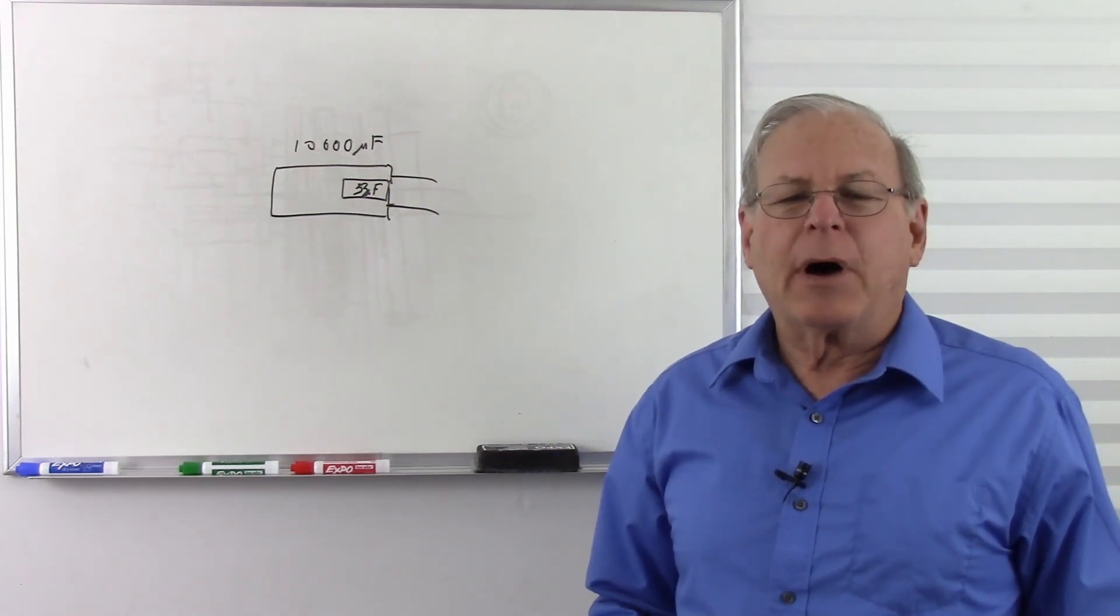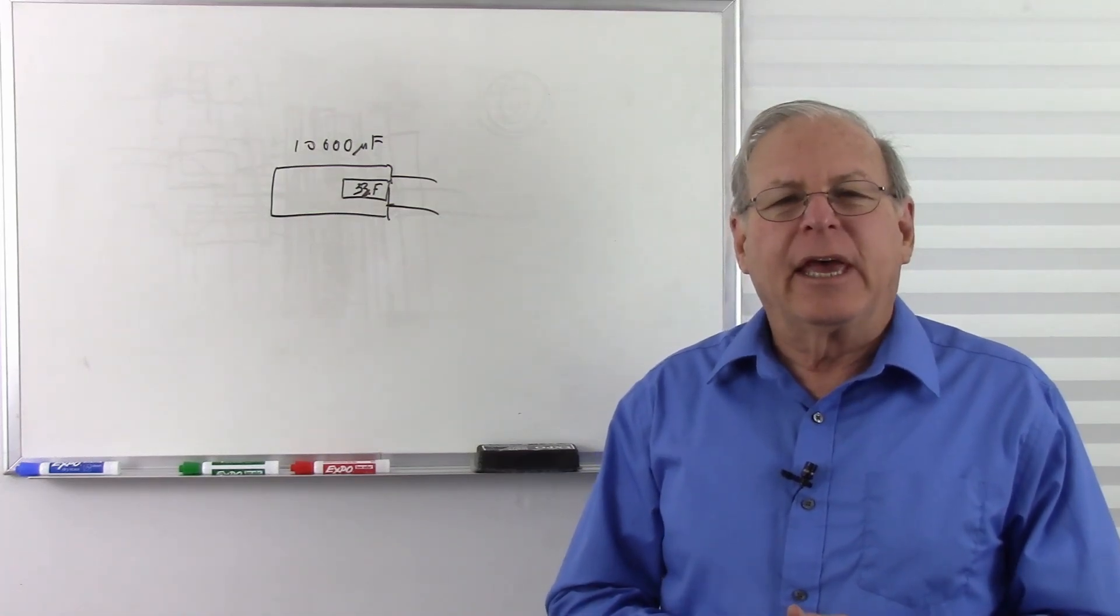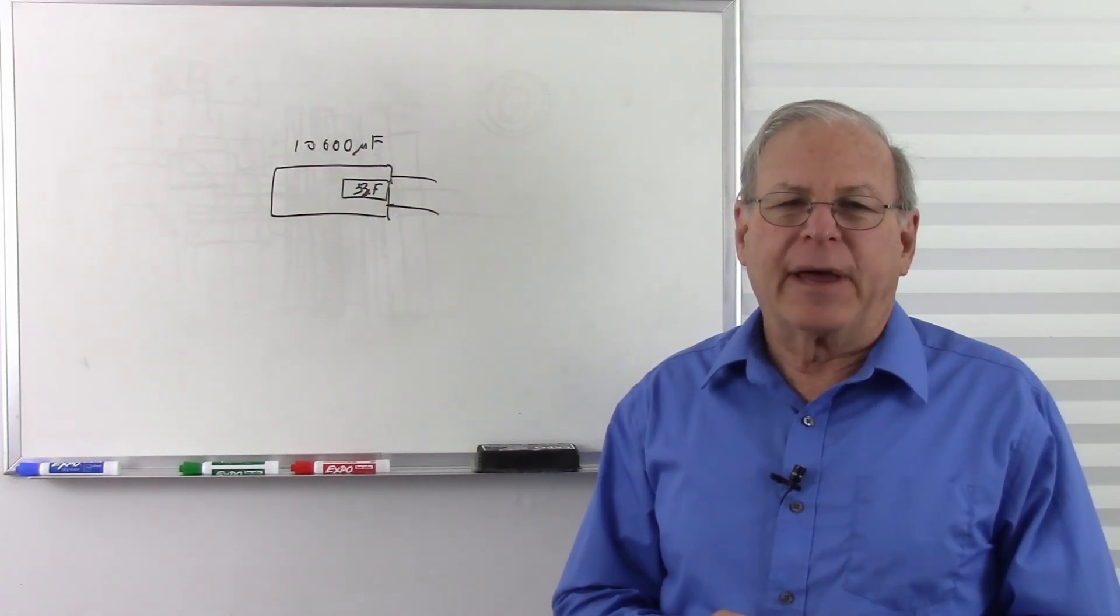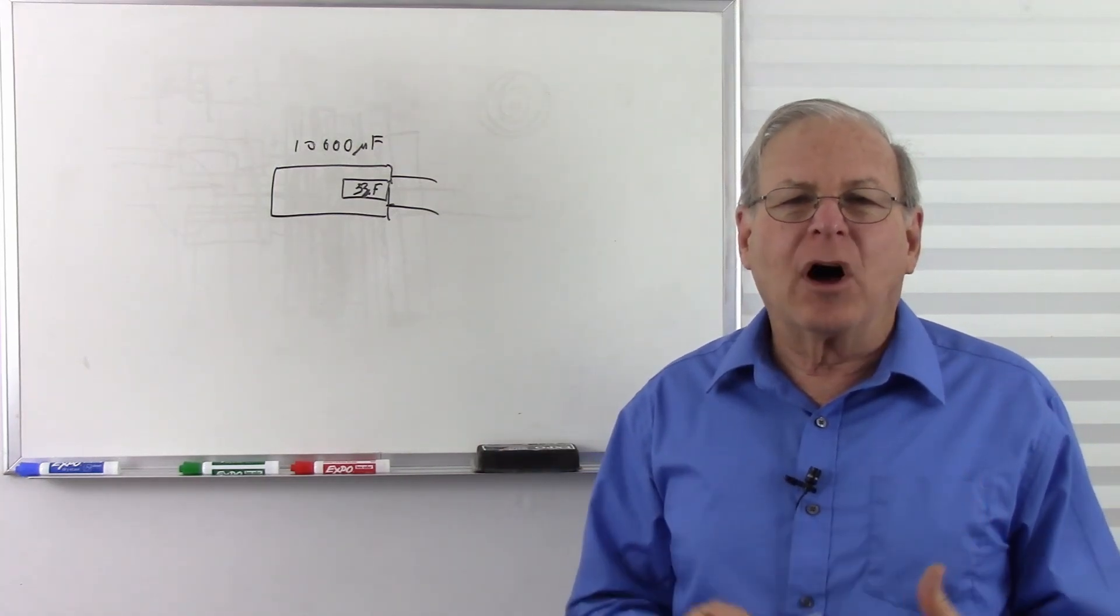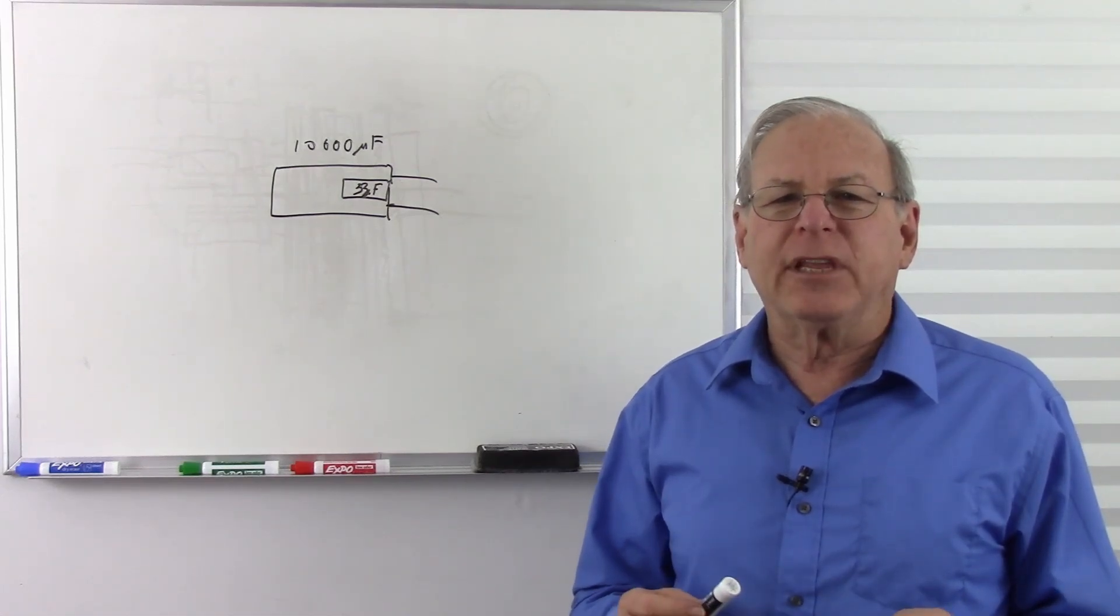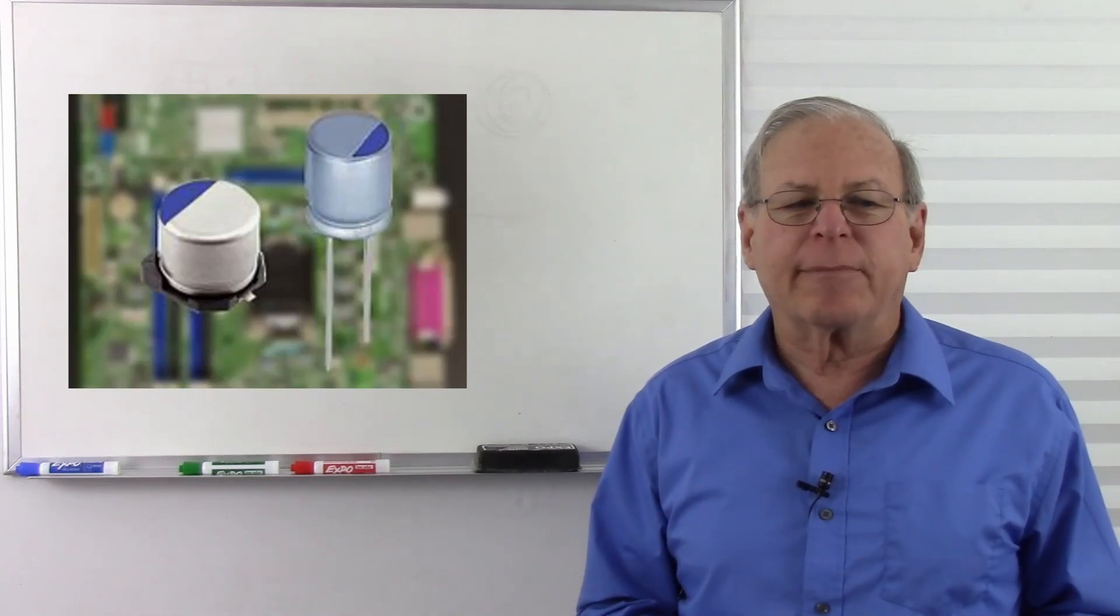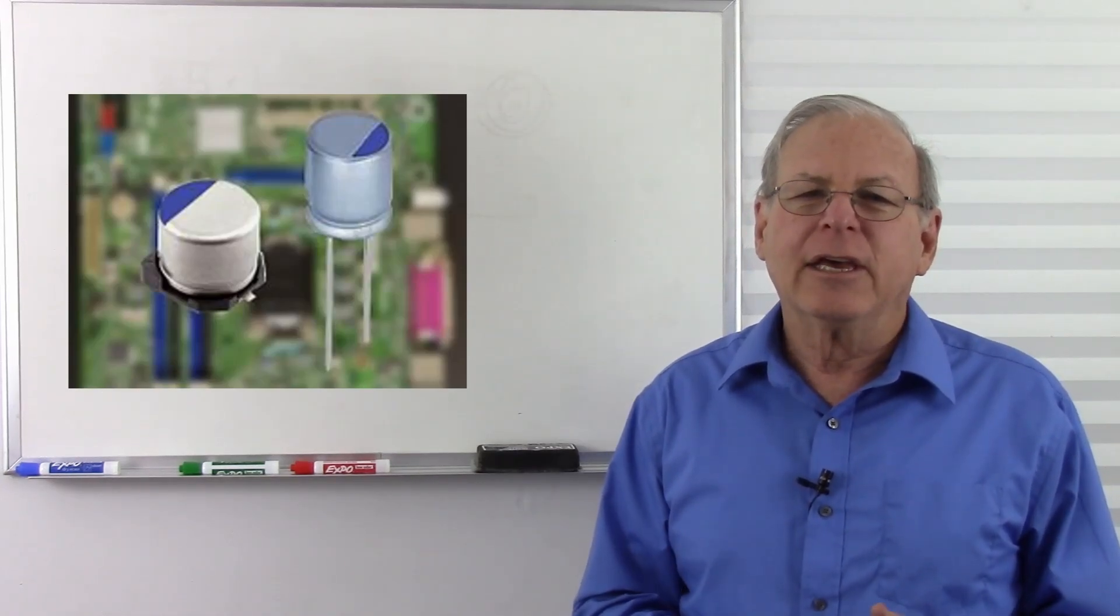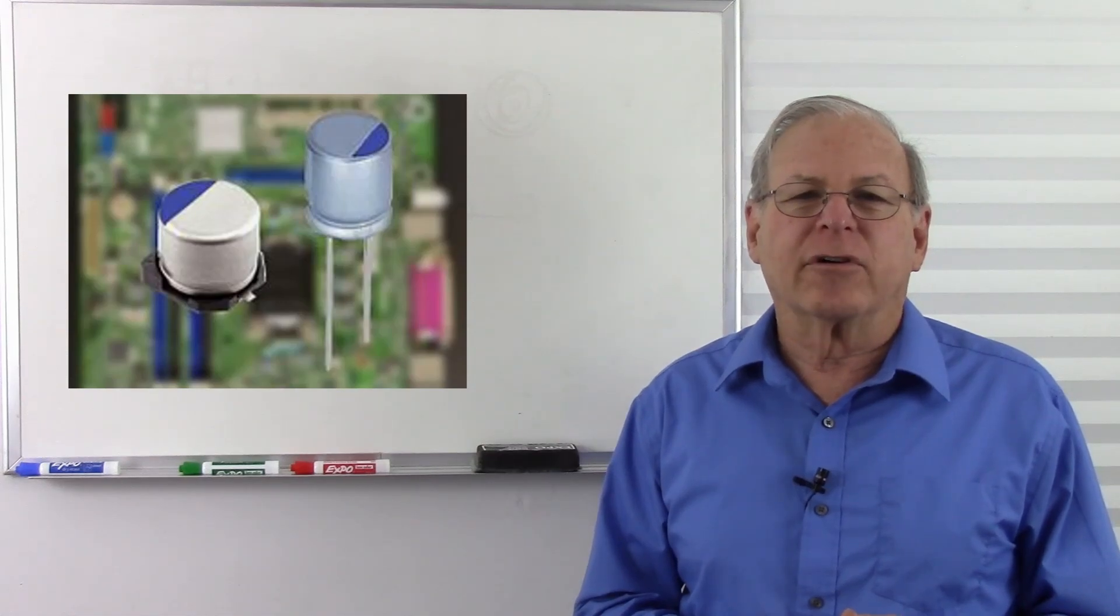One thing that's become popular in recent years, especially because of the aforementioned capacitor plague, is solid electrolyte capacitors. These are typical capacitors, but they have a solid polymer, in other words plastic, as the electrolyte, and they don't have the problems of the liquid electrolyte capacitors. Here's a picture of some solid electrolyte capacitors here, and see what they look like. If you look in equipment today, you'll find that solid electrolyte capacitors are very common.